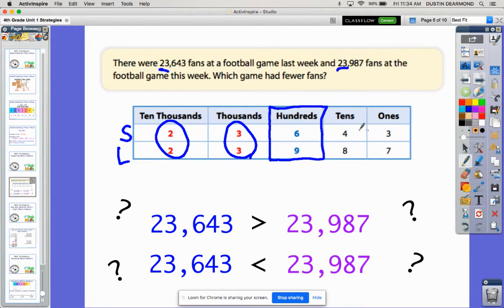23,643 is smaller than 23,987. So in the question in the book, it says which game had fewer fans? We know right here that this one is our smaller number, so it would be the game that happened last week is the one that's fewer or smaller.